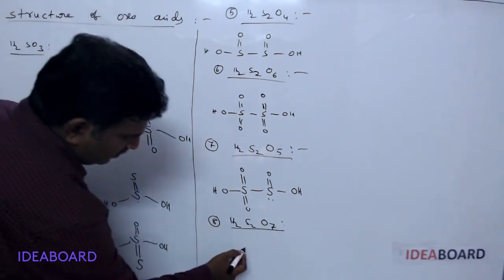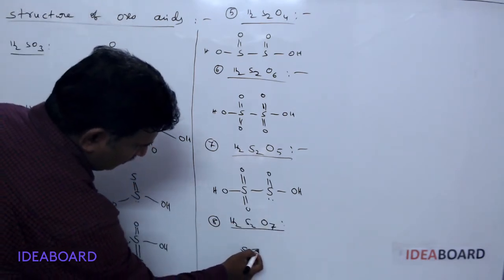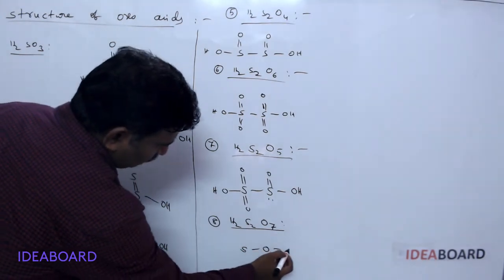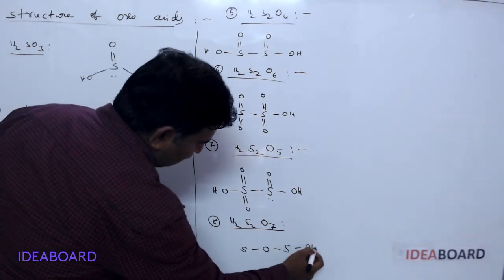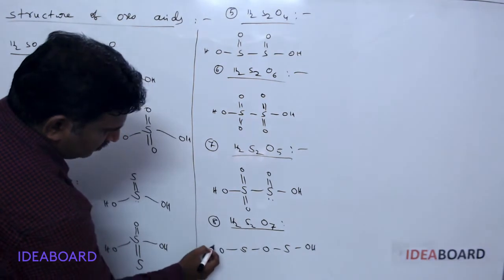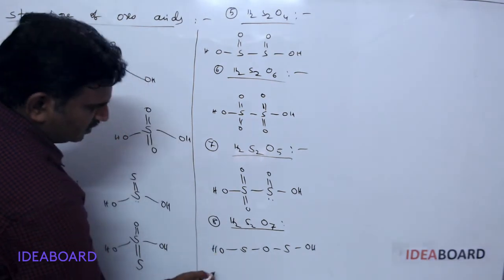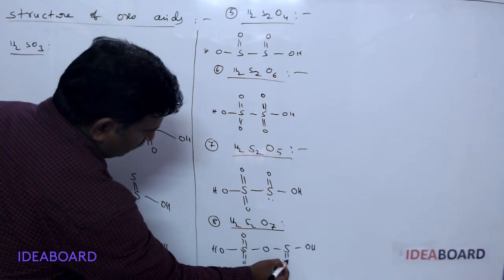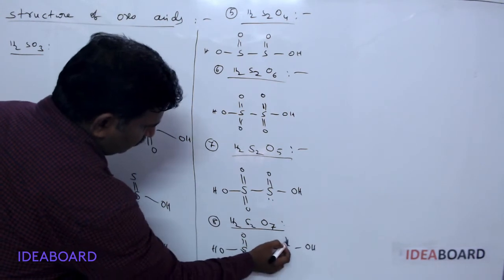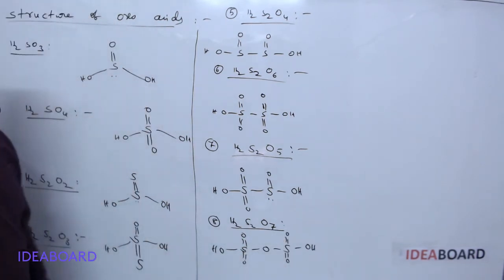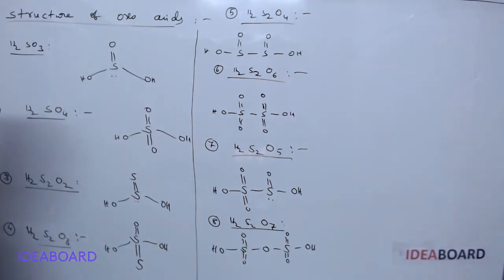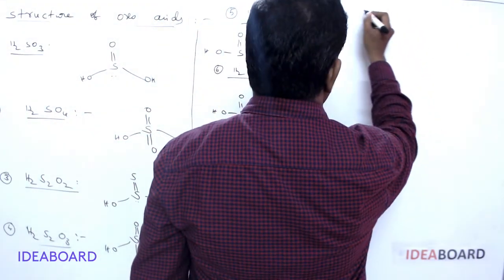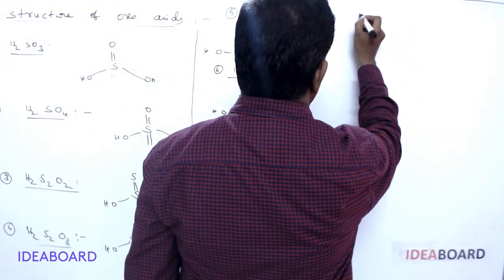The eighth structure is H₂S₂O₇, called oleum or pyrosulfuric acid. The pyrosulfuric acid structure is written as O=S–O–S=O with two OH groups and double bond oxygens on each sulfur — that is the pyrosulfuric acid or oleum form.